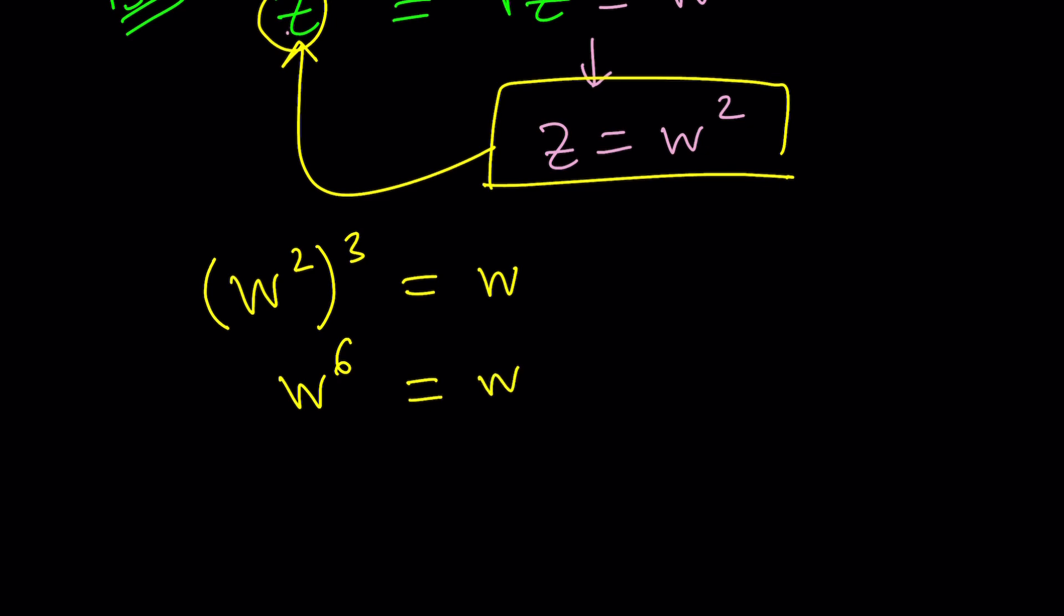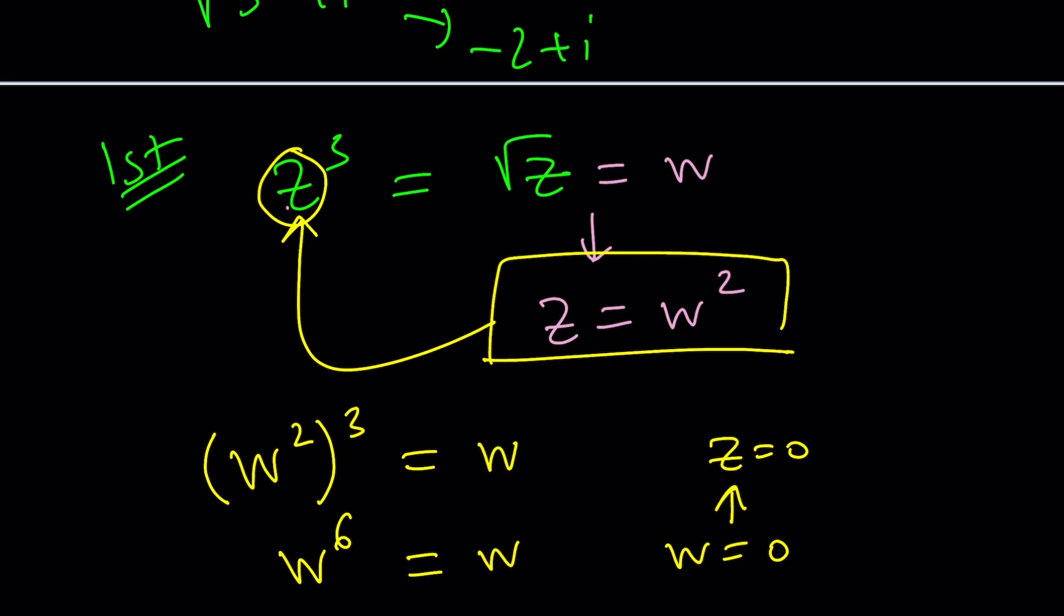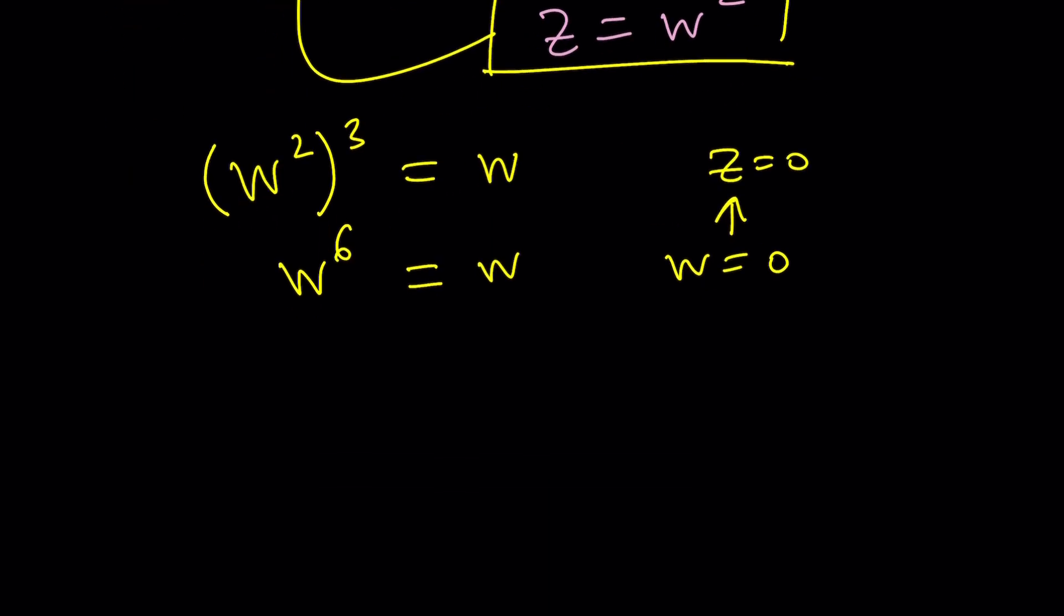Don't divide by w because you're going to lose solutions. But you could also consider the following. I know that w equals 0 is a solution, which implies z equals 0 is a solution. If you plug it in, you're going to see that it checks. So I can say, z equals 0 is a solution. Now assume that z does not equal 0, which means w does not equal 0. Contrapositive, something like that.